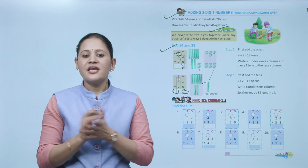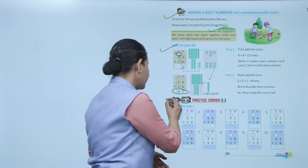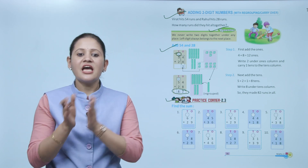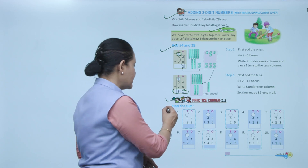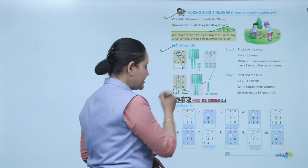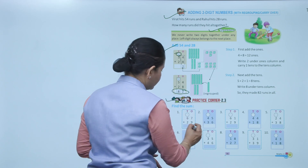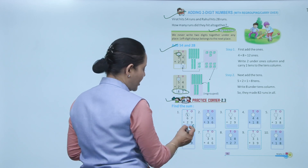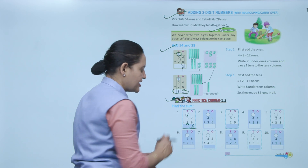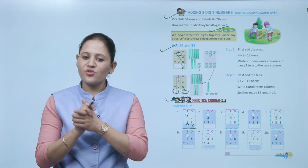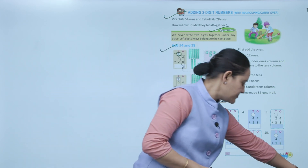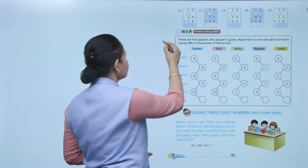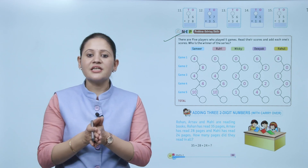Practice corner 2.3 — find the sum: Add 67 and 29. Start from ones — 9 plus 7 is 16, write 6 here and carry 1. Tens: 6 plus 2 is 8, plus 1 carry is 9. Sum is 96. You have to practice all the questions.